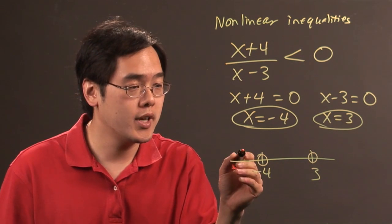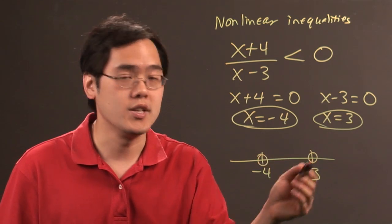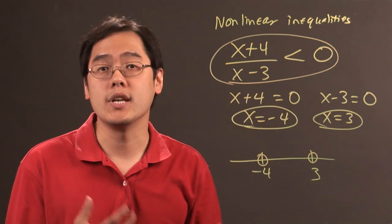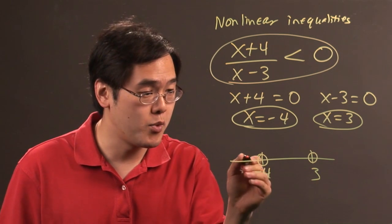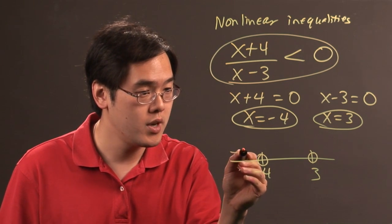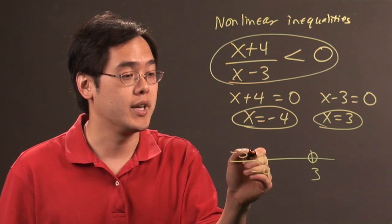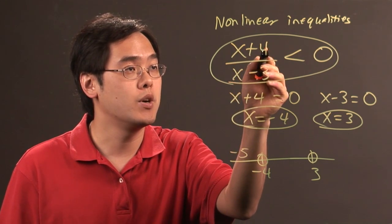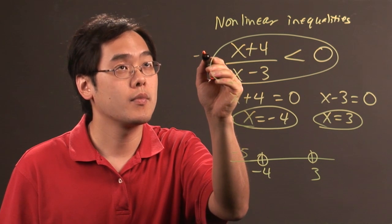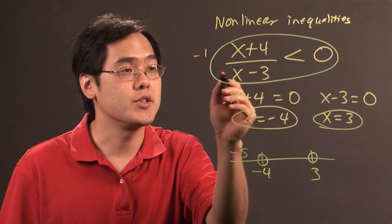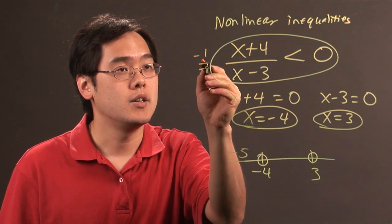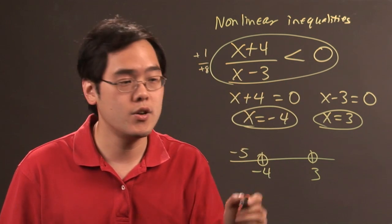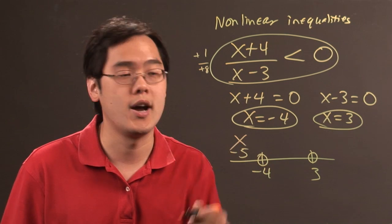After that, we're going to plug in numbers around these into the original problem to see whether or not the numbers fit. For example, we'll pick a number less than -4, like -5, and plug it in. -5 + 4 = -1, -5 - 3 = -8, negative over negative is positive, 1/8 is not less than 0, so numbers less than -5 do not work.